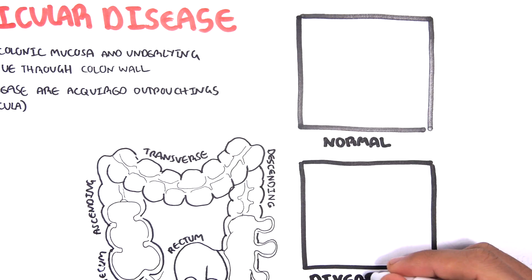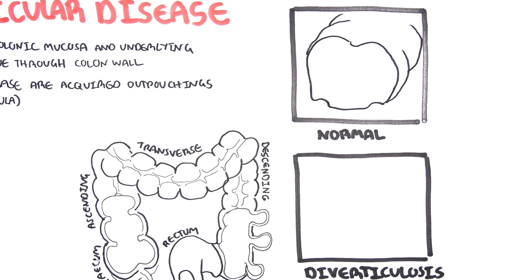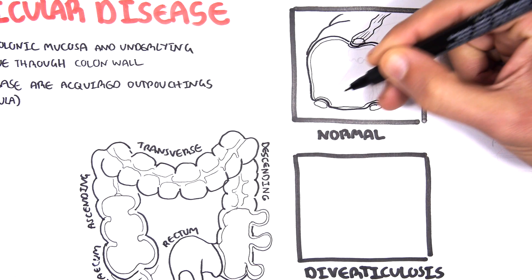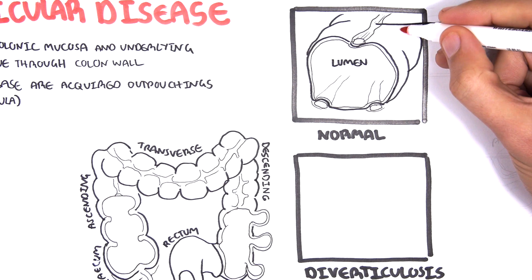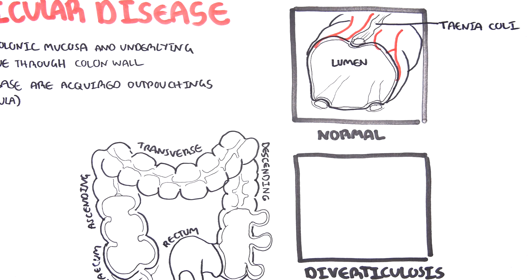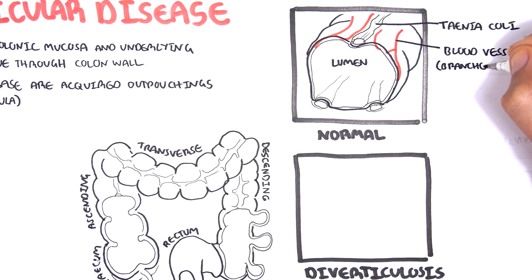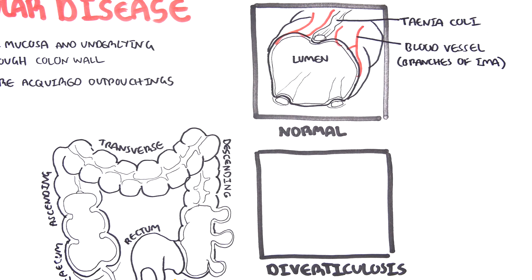Let's cut a cross section of the colon and recap some important structures. The colon is made up of many layers. Here we have the lumen, and a longitudinal muscle fiber known as the taenia coli — we have three of these surrounding the colon. We also have blood vessels which supply the colon wall, originating from the inferior mesenteric arteries, and these blood vessels penetrate through part of the colon wall to supply the surrounding tissue.